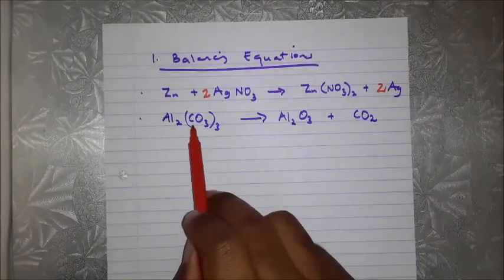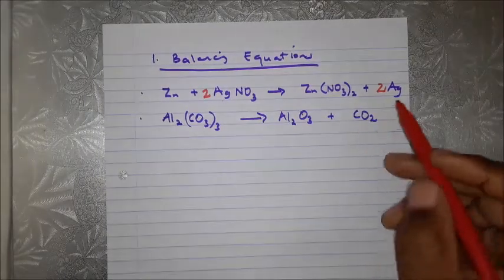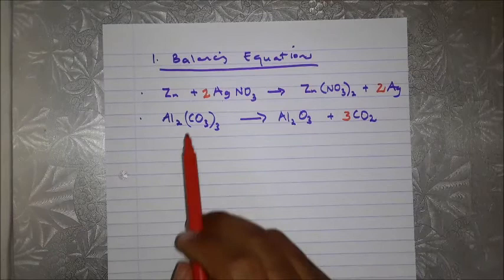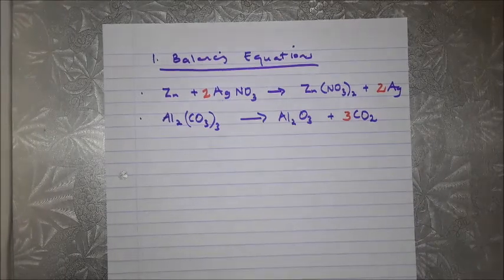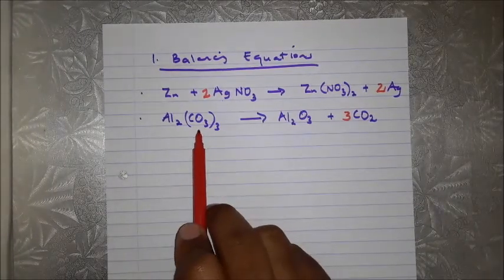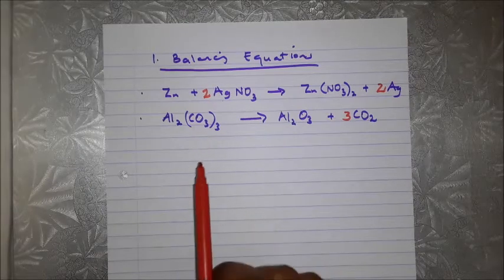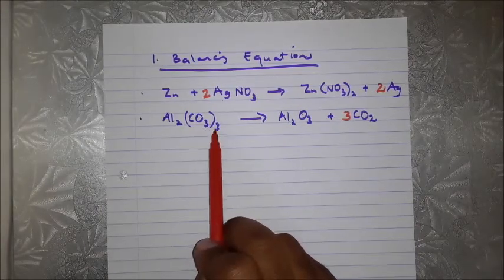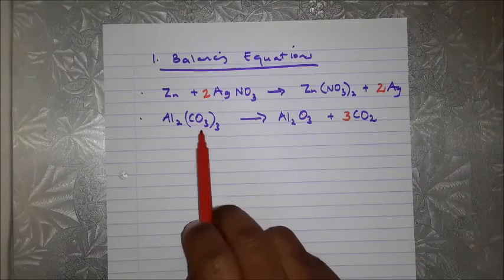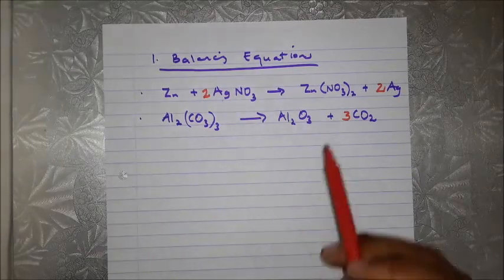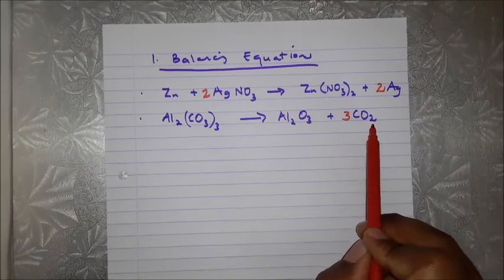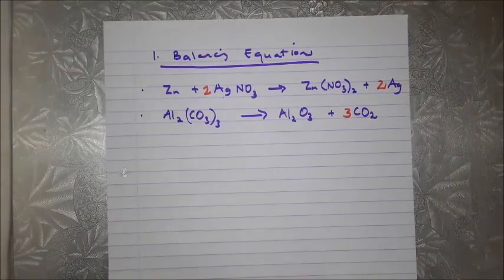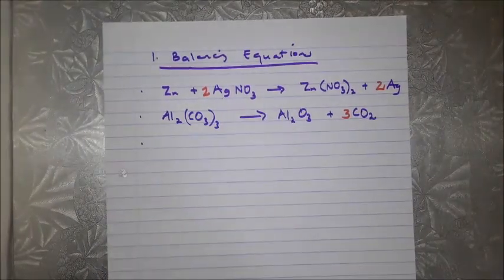For carbon: we have 3 carbons on the reactant side but only 1 on the product, so we put a 3 in front of CO₂ — that gives 3 carbons on both sides. For oxygen: take note it's 3 multiplied by 3, giving 9 oxygens on the reactant side. On the product side: 3 (from Al₂O₃) plus 3 × 2 = 6, totalling 9. The equation is balanced.